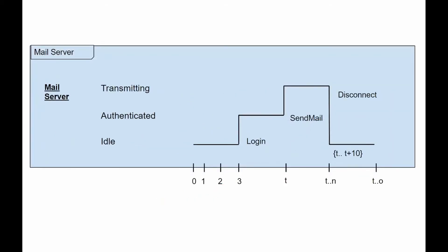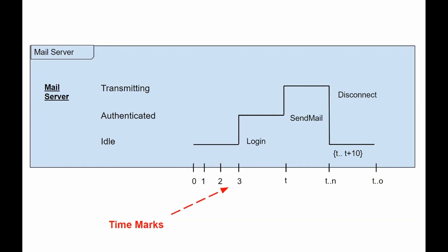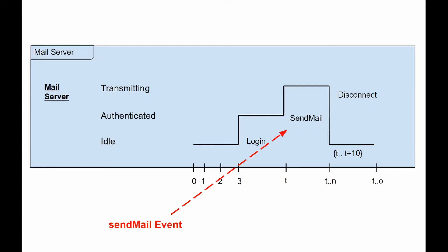We can use the length of the timeline to show how long the object remains in a certain state, reading it from left to right. In this diagram, the login event is received after 3 units of time from the start of the sequence. To show relative times, we can mark a specific instance in time using a variable name. This diagram marks the time when a certain send mail event was received using the letter T. We can use relative timestamps in constraints to indicate that a message must be received within a certain amount of time.